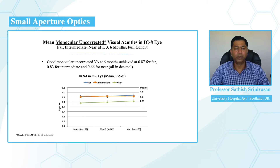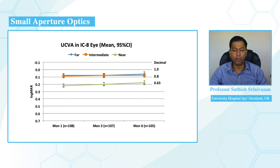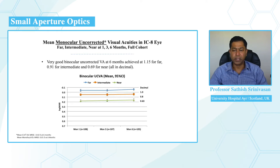This graph shows mean monocular uncorrected visual acuities in the IC8 eye for far, intermediate, and near at one, three, and six months. The blue line depicts uncorrected distance visual acuity in LogMAR, the orange line depicts uncorrected intermediate visual acuity, and the green line depicts uncorrected near visual acuity. As you can see, patients achieved excellent uncorrected distance, intermediate, and near visual acuities in the IC8 eye at one, three, and six months.